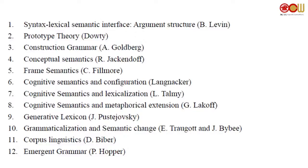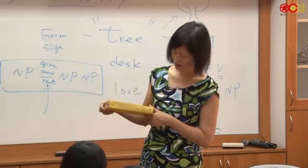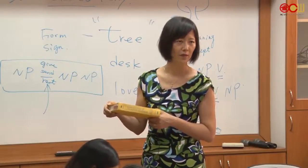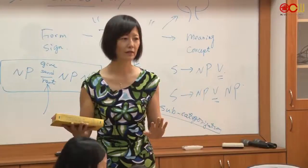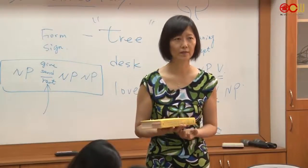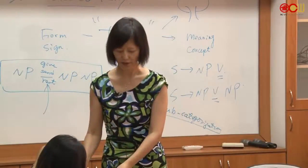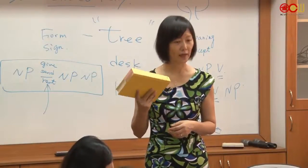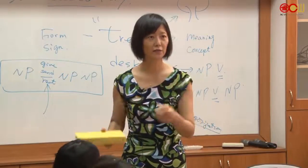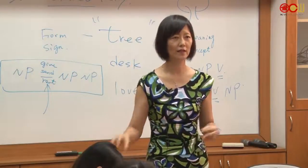Number six is cognitive semantics and configuration by Langacker. He wrote 'Foundations of Cognitive Grammar' and uses configurational representation to show how meanings are connected. He is good at talking about image schemas and how things can be spatially represented. This is called Cognitive Grammar — his focus is on configurational relations.